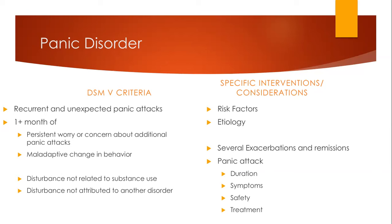The main theory behind how panic attacks start is that there's some type of abnormality in our fear network. Our fear network is the amygdala, the hippocampus, the thalamus, the midbrain, the pons, the medulla, and the cerebellum, and how they all work together to form our fight-or-flight response. There's some theory that there's an abnormality in that region.